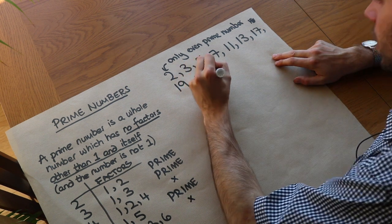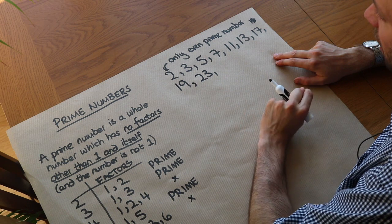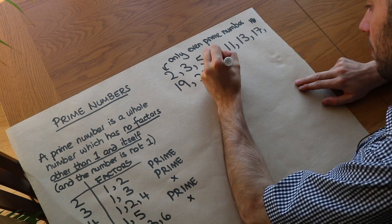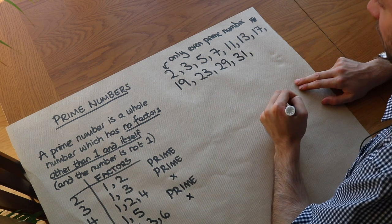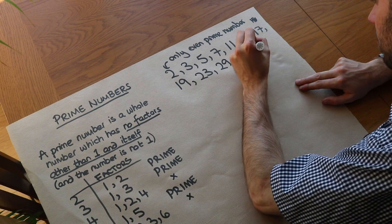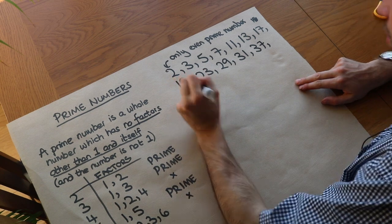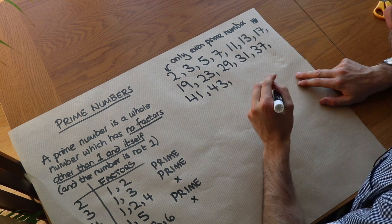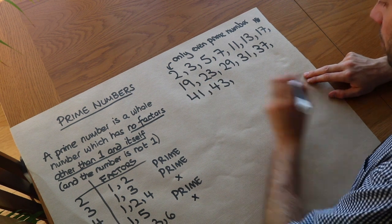Twenty-three is prime. Twenty-five ends in a five, so it divides by five — not prime. Twenty-seven: digits add up to nine, a multiple of three, so it divides by three — not prime. Twenty-nine is prime. Thirty-one is prime. Thirty-three divides by three and by eleven. Thirty-five ends in a five — not prime. Thirty-seven is prime. Thirty-nine is a multiple of three. Forty-one is prime. Forty-three is prime. Forty-five: four plus five is nine, a multiple of three — not prime. Forty-seven is prime.